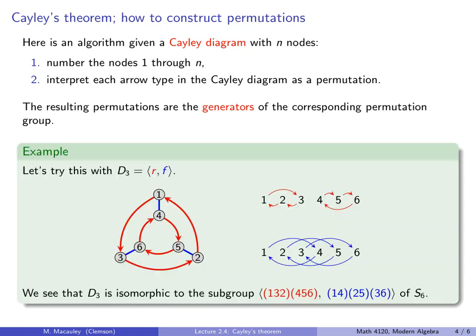Let's do an example. So here's D3, and we numbered the nodes 1 up to 6 arbitrarily. And now let's look at the two types of arrows. Let's start with the red arrow. So the red arrow takes 1 to 3, 3 to 2, and 2 to 1. And 4 to 5, 5 to 6, 6 to 4. That's a permutation, and that's corresponding to the generator R.